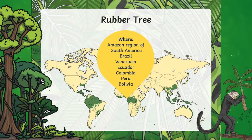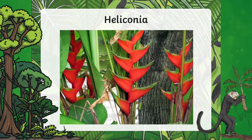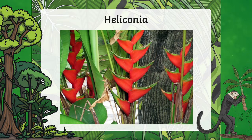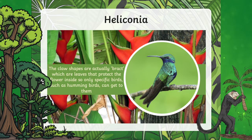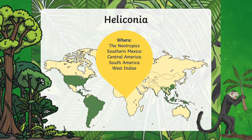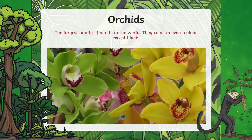In the PowerPoint, your pupils will learn about over 11 plants that thrive in the Amazon, as well as whereabouts in the Amazon rainforest these plants can be found, what they can be used for, and what wildlife they attract.